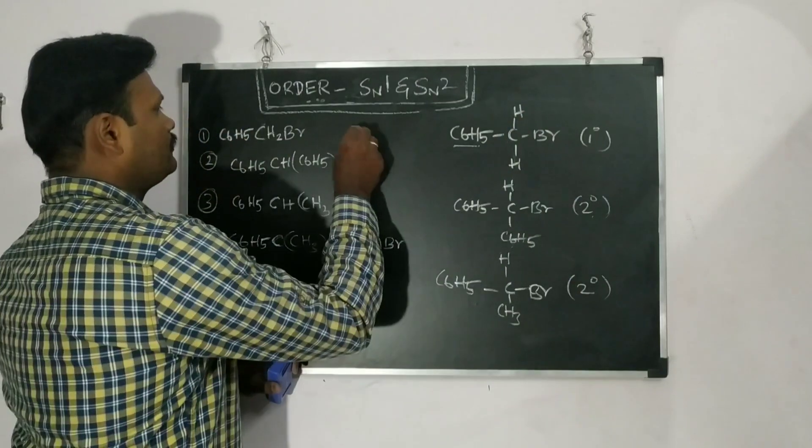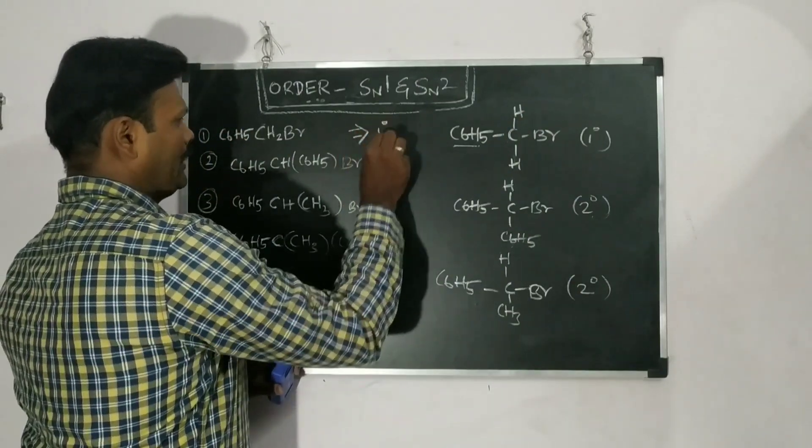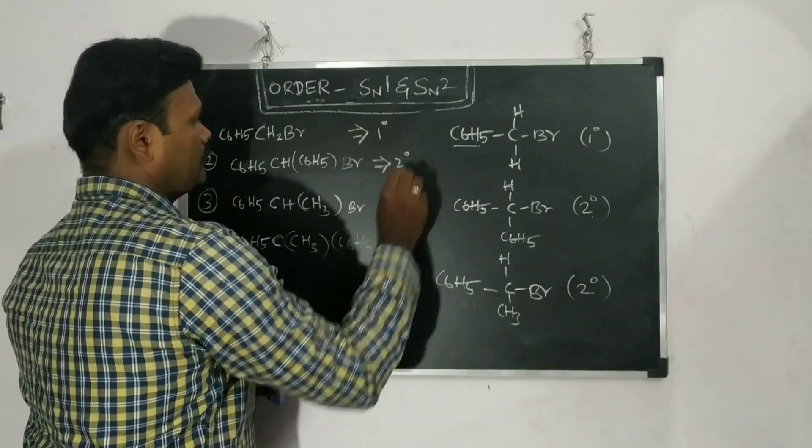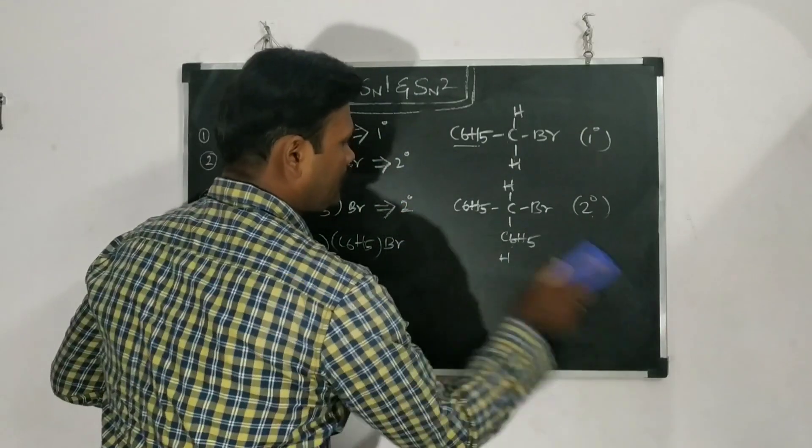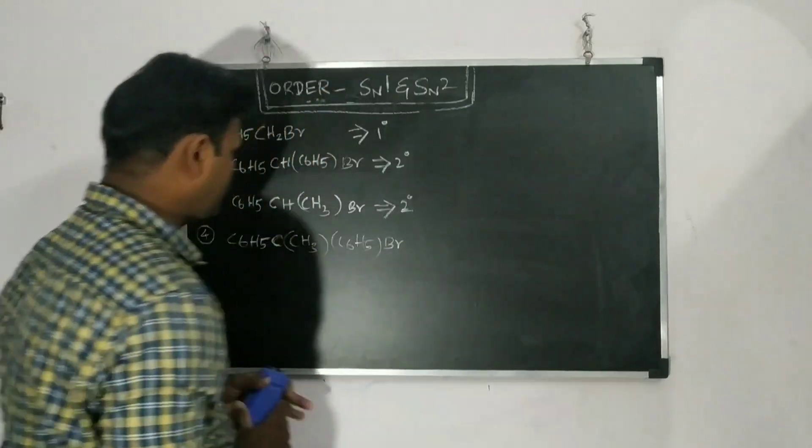So now we can find out the degree. So here it is 1 degree. Here it is 2 degree. And here it is also 2 degree. What about this degree one? So we have to calculate. So how we can find out the degree?